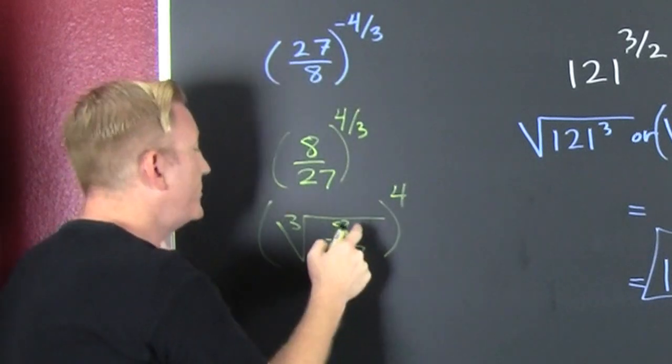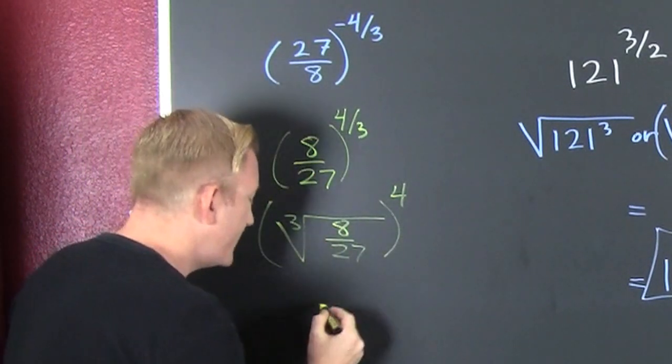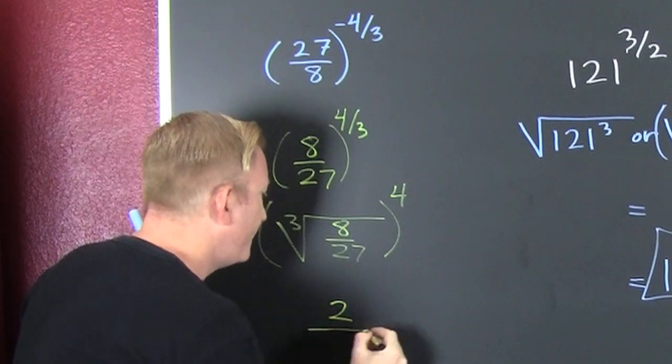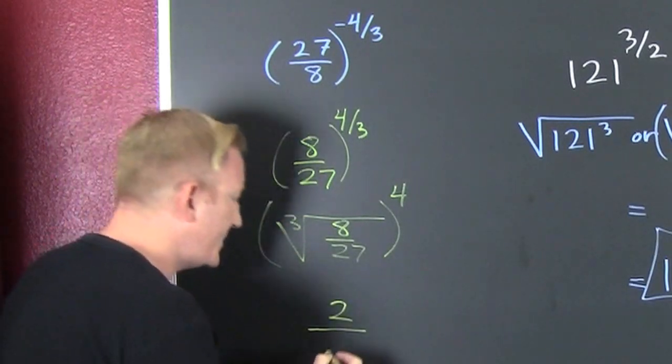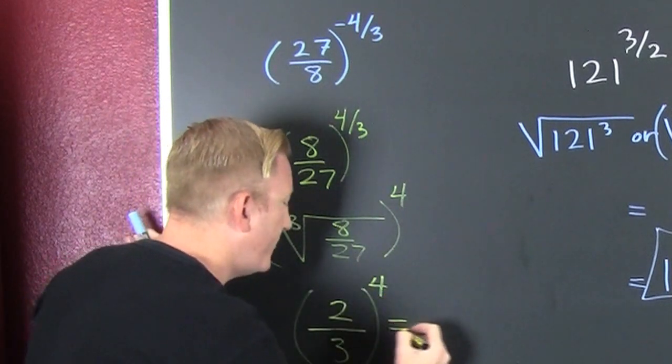But then, you go more. The 3rd root of 8 is 2. Why? Because that's 2 times 2 times 2. There's 3 2s. So, that's a 2. And then, there's 3 3s in 27.